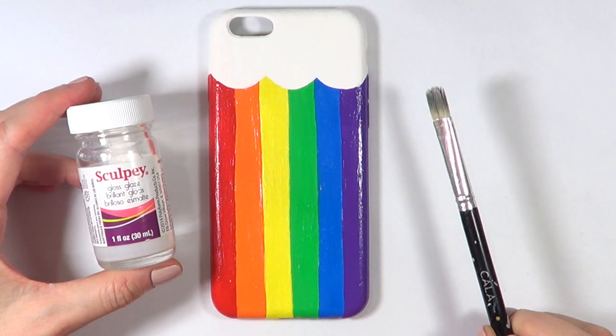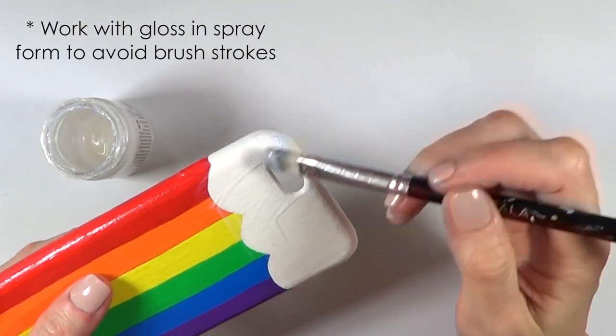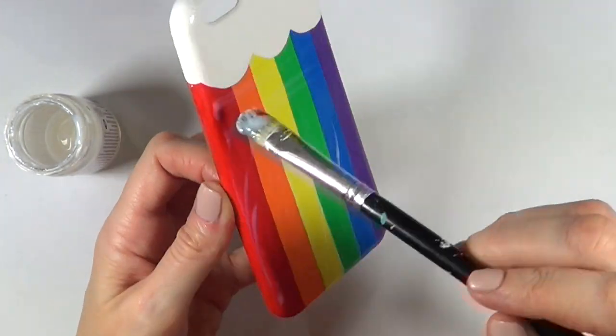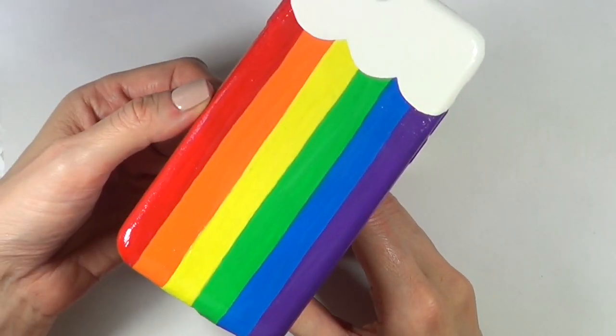Once it's done, I'm adding some gloss on top. I'm using the one by Sculpey, giving this a couple of coats to make it nice and shiny and protect it. It's going to make the whole thing blend together. And this is how I'm letting it dry.